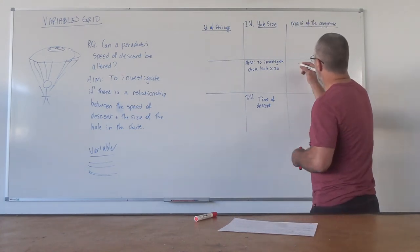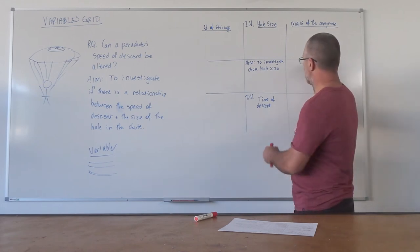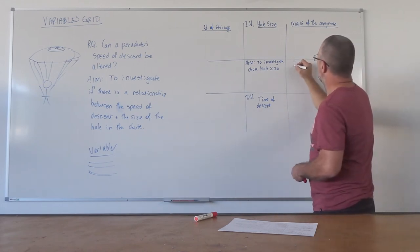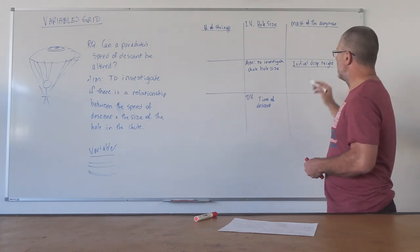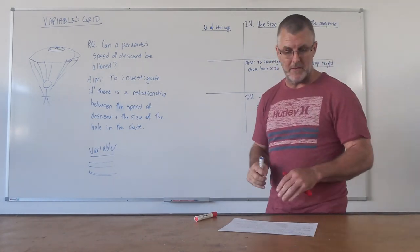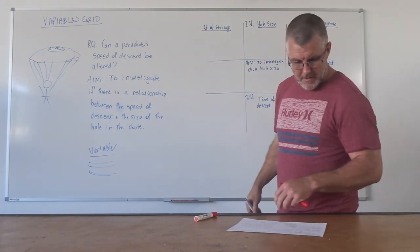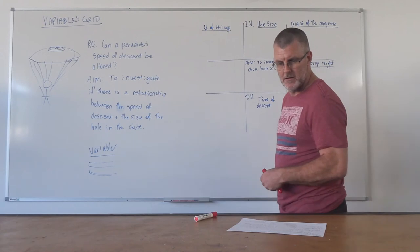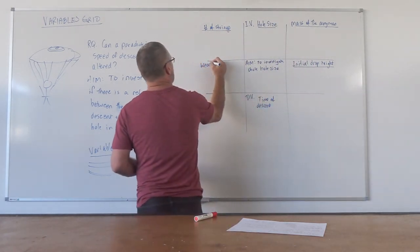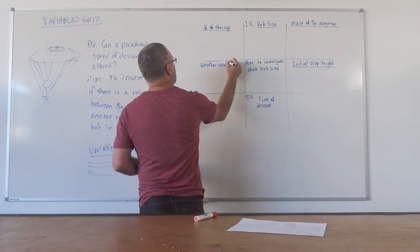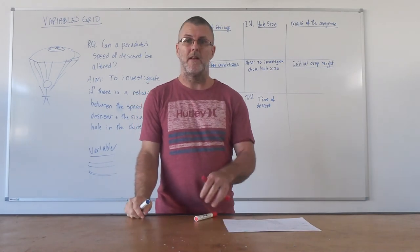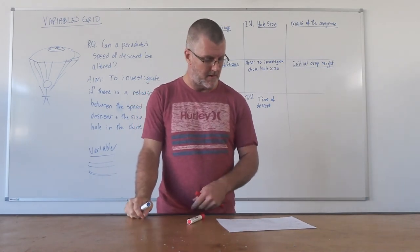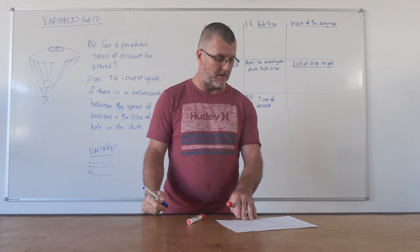Another thing that would likely affect the time of descent, because we're measuring the time, remember, is the initial drop height. So how high we initially dropped that army man from, surely that would affect the time measured for the descent. And what about if we look at something like weather conditions? We can look at weather conditions. If it's windy, if it's raining, which it tends to do a lot in Tully, those sort of things may affect the drop time, the time for descent.